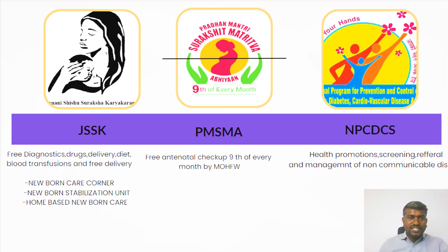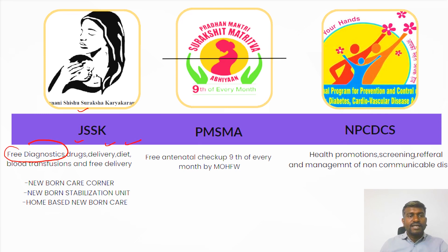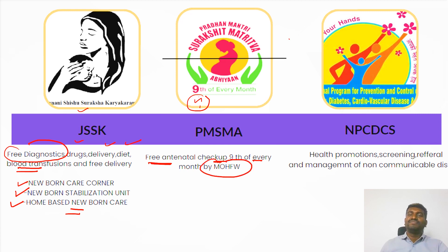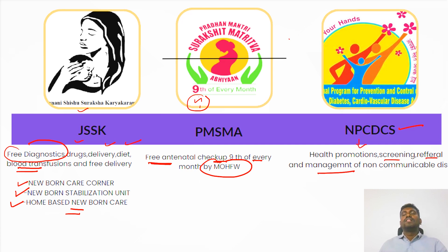Now let's talk about important programs. First is Janani Sishu Suraksha Karyakram. In this program, the pregnant female is going to have free diagnosis, free drugs, free delivery, free transport, and also free blood transfusions if required. Under this program, we have newborn care coordinators, newborn stabilization units, and home-based newborn care. The next logo is Pradhan Mantri Suraksha Matritwa — every 9th of every month, the pregnant female gets a free antenatal checkup, coming under the Ministry of Health and Family Welfare. The next logo talks about the national programs for cancers, diabetes, cardiovascular diseases, and stroke. This program covers health promotions, screenings, referrals, and management of non-communicable diseases.